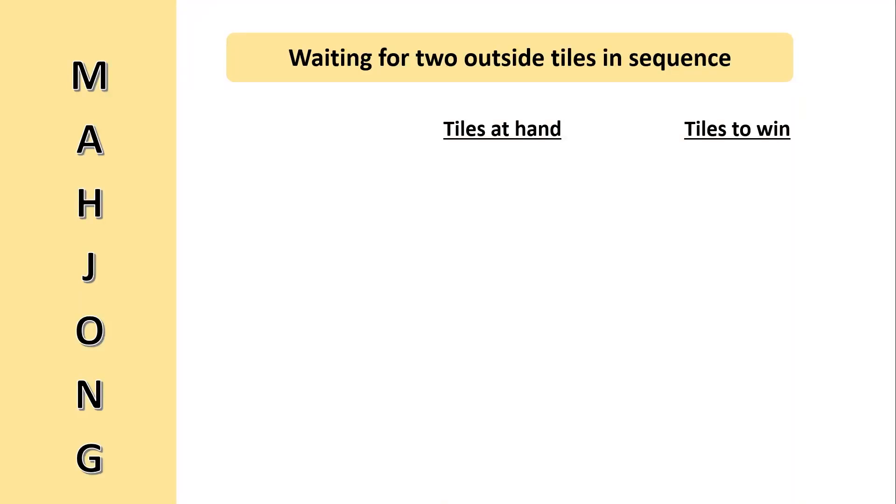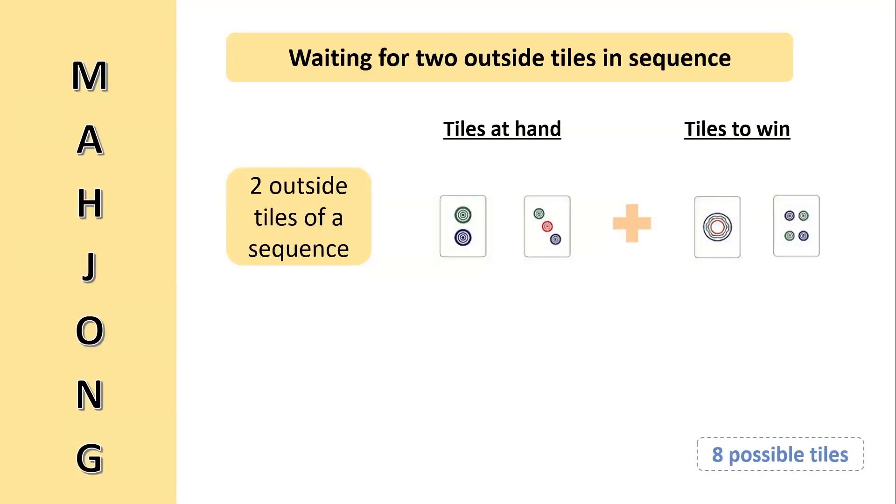Now, we move to a better hand that allows us to be in a better position to ting pai and win the game. In this example shown, we have a er tong and san tong. We can therefore win the game if we get either a yi tong or si tong. This means that there are eight possible taus for us to draw from, which is a far higher possibility compared to the previous few situations shown.